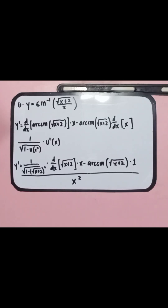Next problem: y equals arcsin of the square root of (x plus 2) over x. The rule we are going to apply here is the quotient rule, which is (v du minus u dv) over v squared — also known as low d-high minus high d-low over low squared.